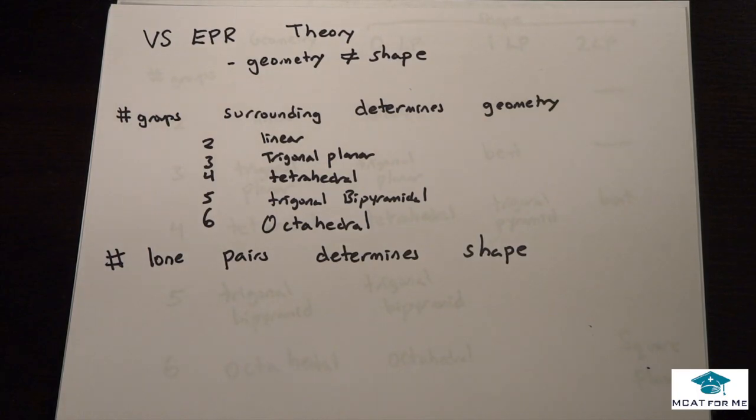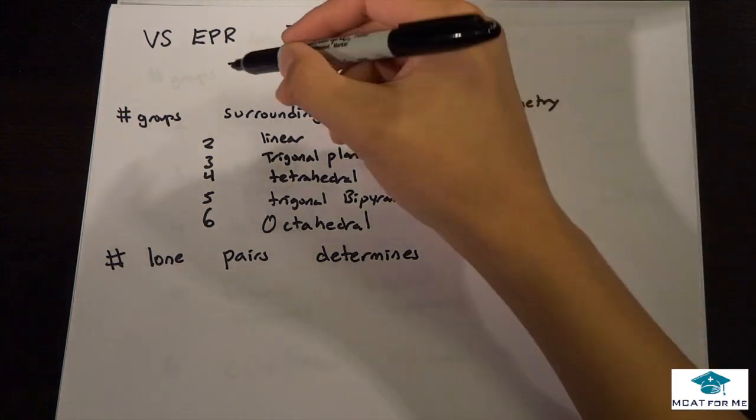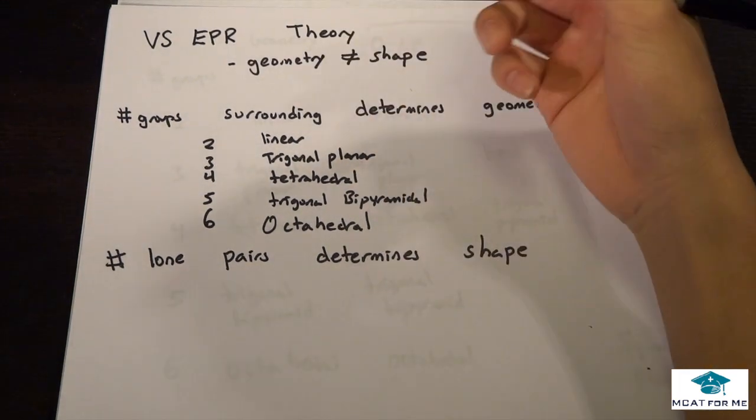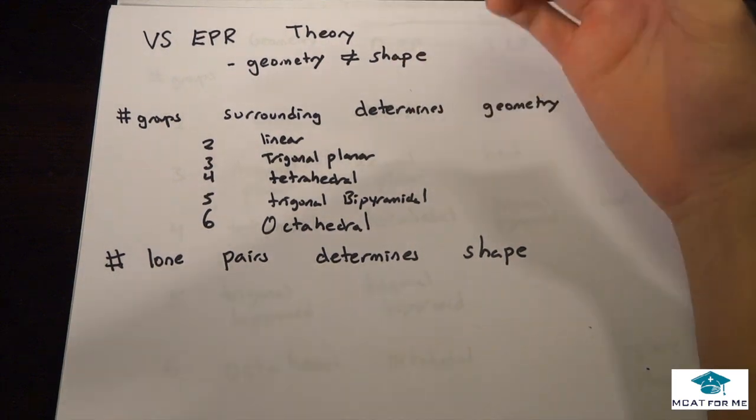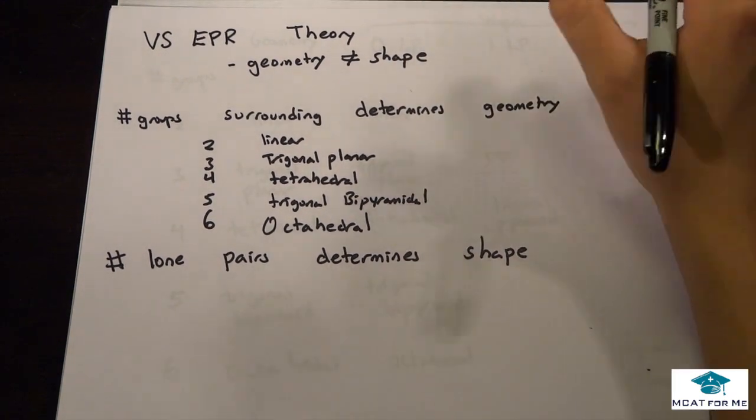The next thing we're going to be talking about is VSEPR theory, and this is pretty important stuff to remember. What it is is that we have something called geometry and shape. A molecule has a certain geometry and it has a certain shape to go along with that, but they're not the same.